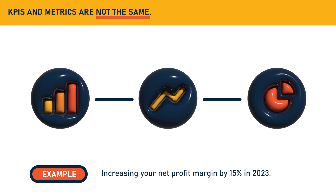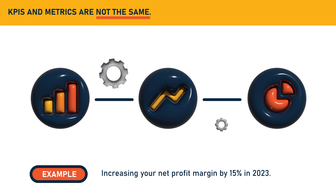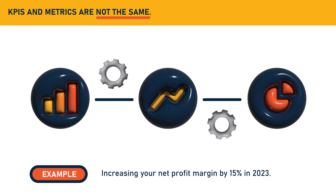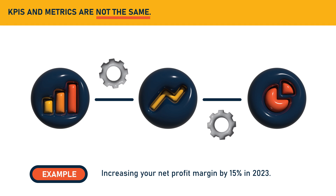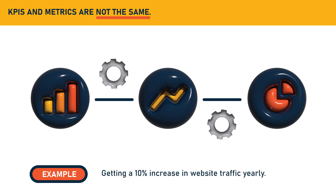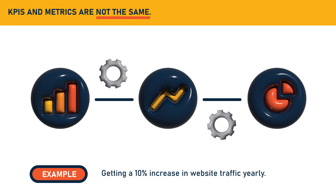Meanwhile, a metric is more operational than strategic. Rather than measuring your progress based on your long-term initiatives, metrics gauge the performance of your day-to-day processes. For example, getting a 10% increase in website traffic yearly is a metric.